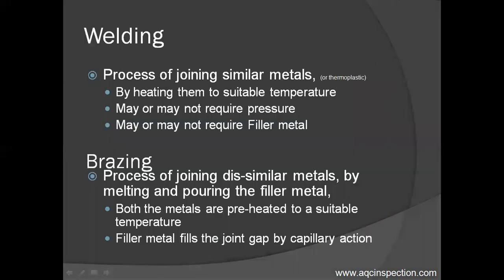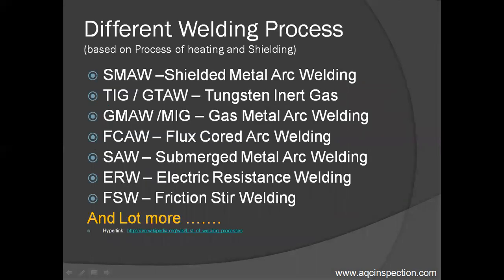Welding is a process of joining similar metals, and brazing is a process of joining dissimilar metals. There are different welding processes based on the process of heating and shielding methods.